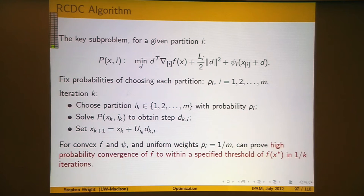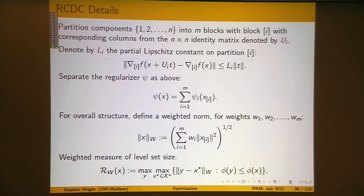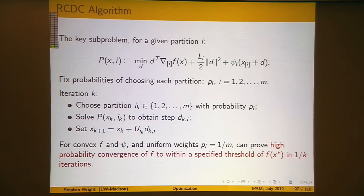Here's the approach. We pick a single index i — a single partition — and we solve a prox-linear type problem, exactly the problem we saw when talking about shrink algorithms. We set up the problem by taking the partial gradient over just the vectors in partition i, add this prox term with the Lipschitz constant L_i penalizing the 2-norm of the step, and then add on the piece of the regularization function corresponding to component i only. You don't need to look at all other partitions because you're not taking any steps in those components.